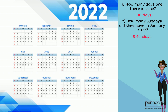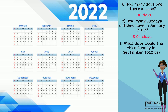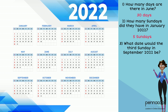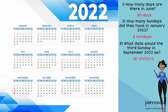Question number three: what date would the 3rd Sunday in September 2022 be? Find September on your calendar and find the 3rd number on the Sunday. The 3rd number on Sunday is 18. Therefore, the 3rd Sunday in September is the 18th.